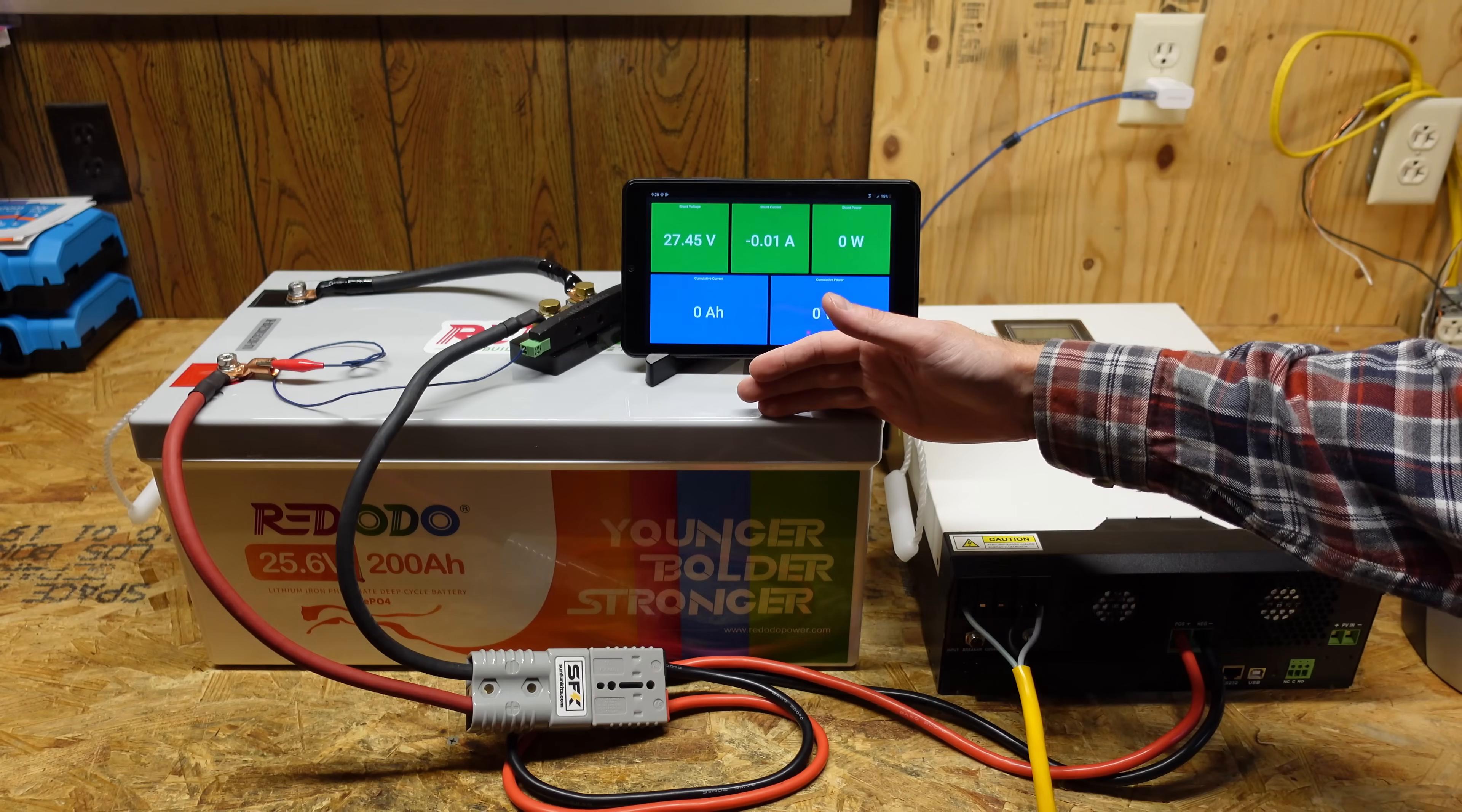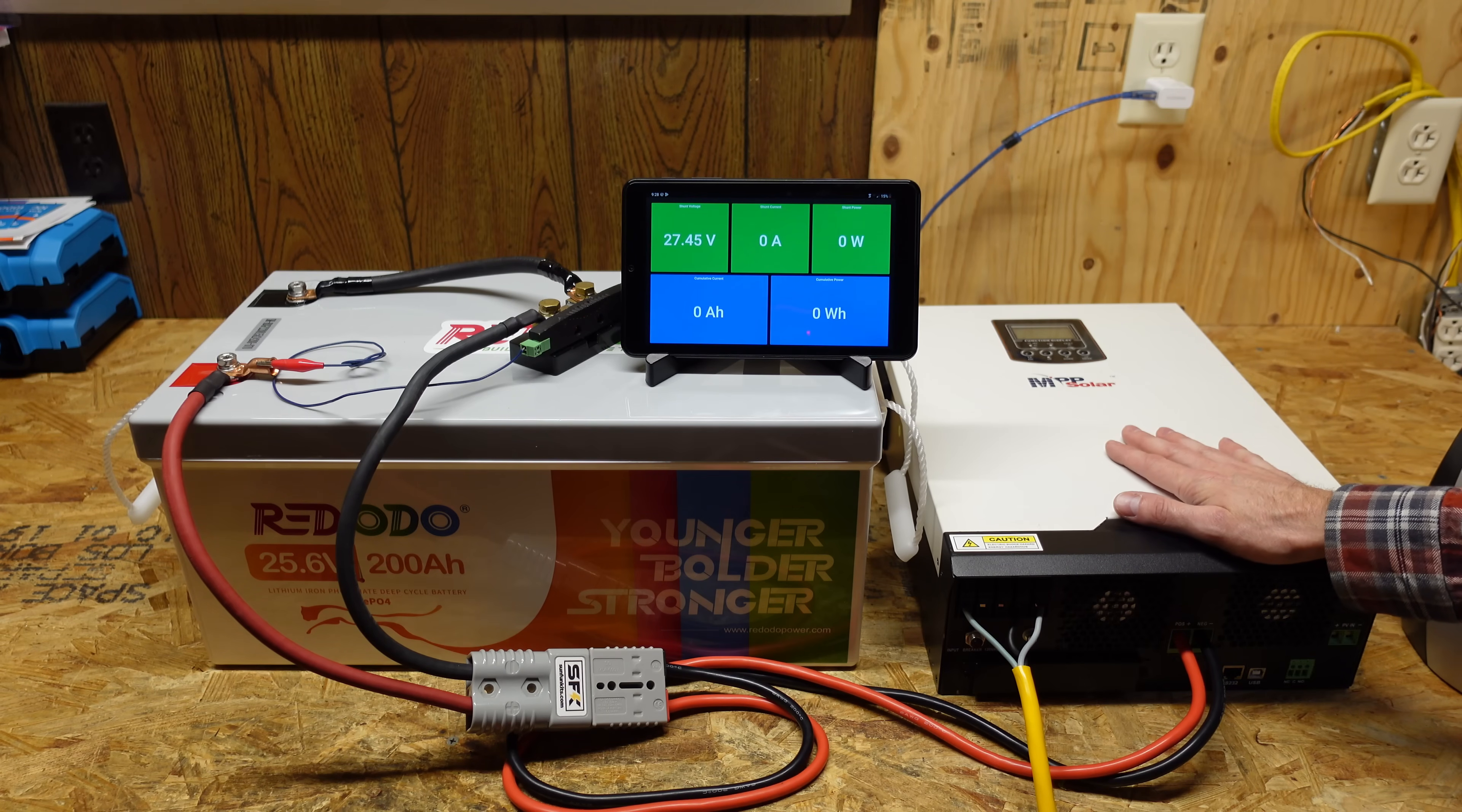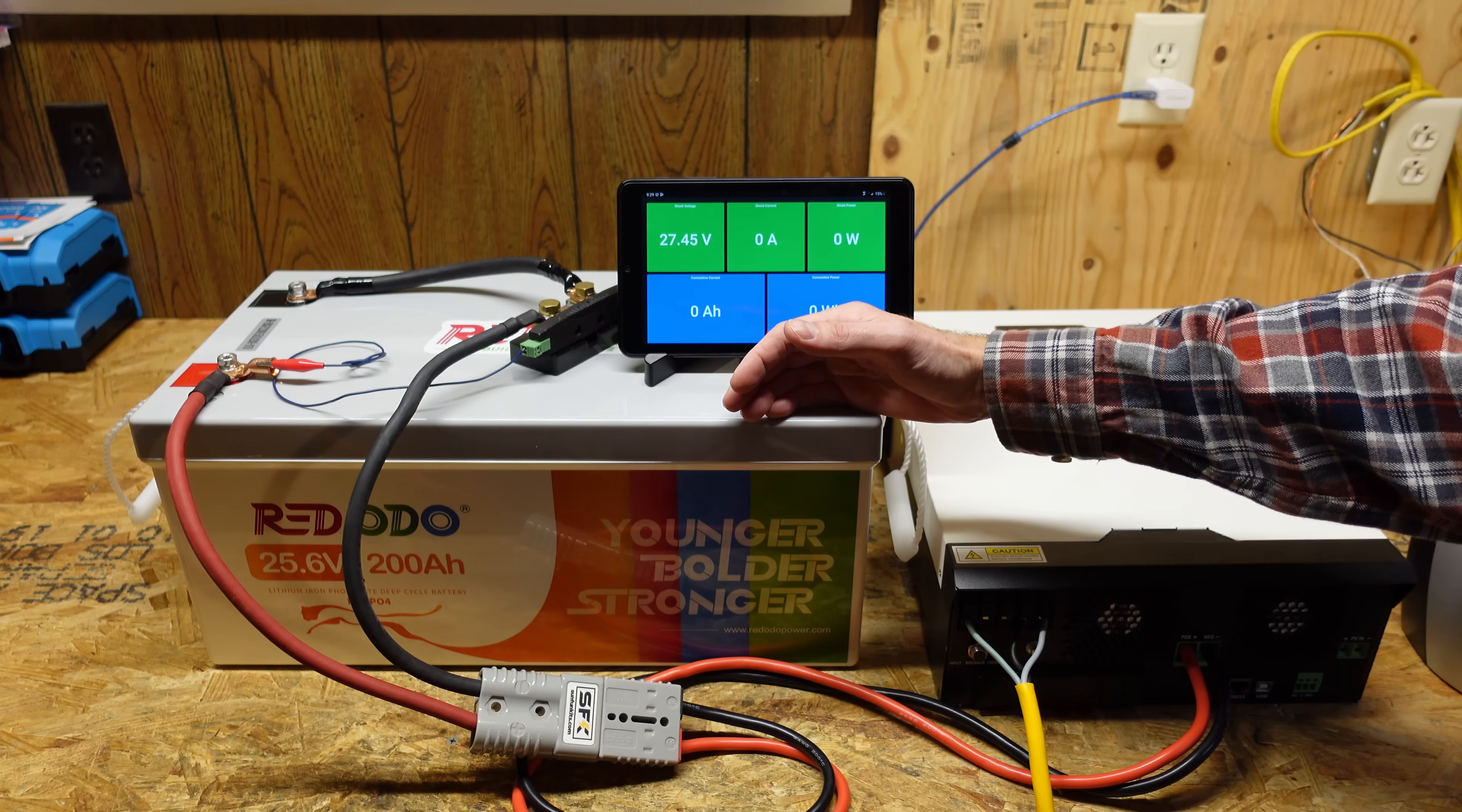For the capacity test, since this is a 24 volt battery, we've had to break out the MPP solar inverter. This is an LV2424-MSD on a 24 volt, 200 amp hour battery. A 0.2C rate will be approximately 1,000, 1,024, I think it was, watts.